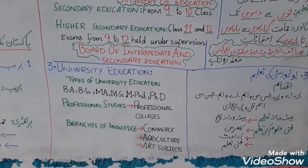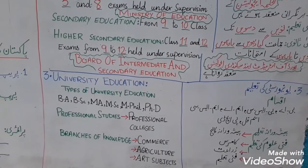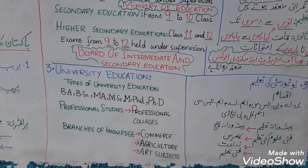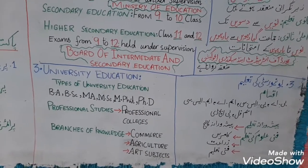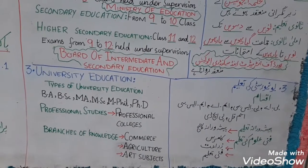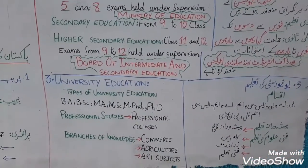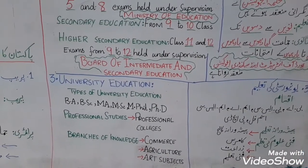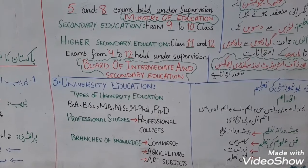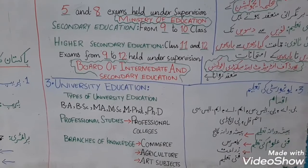For subjects like commerce, agriculture and other arts-related branches of knowledge, there are also separate colleges and universities established — commerce colleges and universities, agriculture universities, and colleges for fine arts and other specialized subjects.